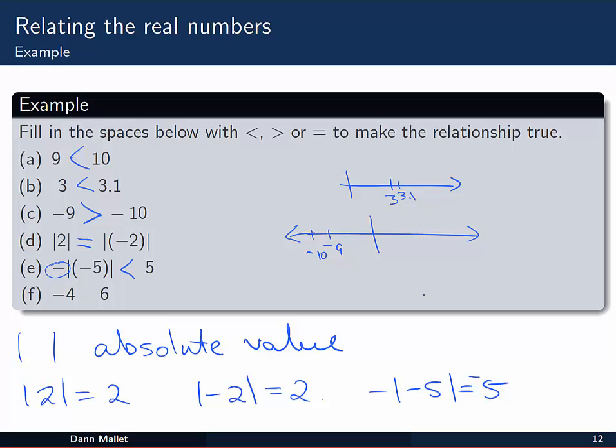Finally, we've got minus 4 and 6 on the number line. Minus 4 is off to the left of the origin. And 6 is over here on the right. So, of course, minus 4 is less than 6.